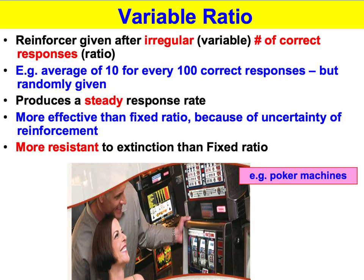A variable ratio schedule of reinforcement provides a reinforcer after a variable number of correct responses. So because of the unpredictability of the delivery of the reinforcer, it produces a steady response rate. For example, when you're gambling — let's say experience tells you that when you're playing a certain machine, it pays out on average once every ten goes. And let's say you've had 30 goes in a row with no win. Your mindset is 'next one for sure.' So your motivation and response rate is high.